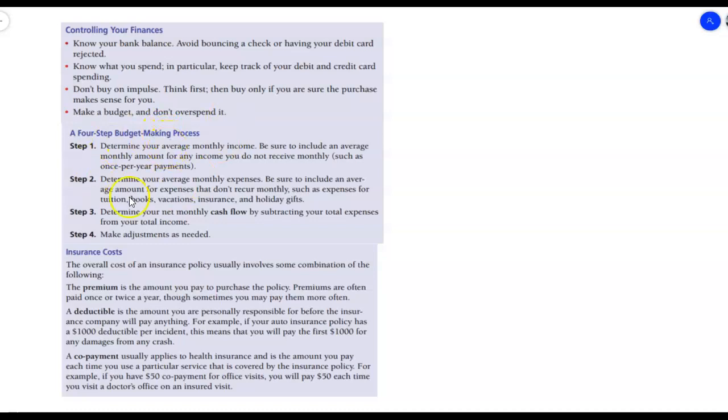Four step process for making a budget. Step one is determine your average monthly income. Be sure to include an average monthly amount for any income you do not receive monthly, such as once per year payments. For example, if you do receive a payment once per year, then just divide that by 12 in order to see how much that affects your monthly income. Determine your average monthly expenses. Be sure to include an average amount for expenses that don't recur monthly, such as expenses for tuition, books, vacations, insurance, and holiday gifts. Determine your net monthly cash flow by subtracting your total expenses from your total income and make adjustments as needed.